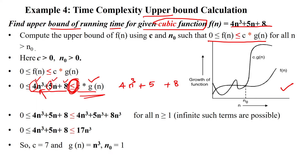We take the coefficients of all terms: the higher-order term coefficient gives 4n³, then 5, and the constant 8. Since c·g(n) must always be greater than f(n), and the dominating term is n³, we replace all terms with n³. Adding 4 + 5 + 8 gives 17, so c·g(n) = 17n³, meaning c = 17 and g(n) = n³.